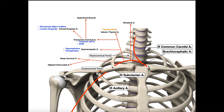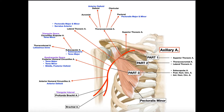Right where the subclavian artery passes over that margin of the first rib, it becomes the axillary artery — that's where the axillary artery starts. So as it goes over that margin of the first rib, which you really can't see, it becomes the axillary artery.